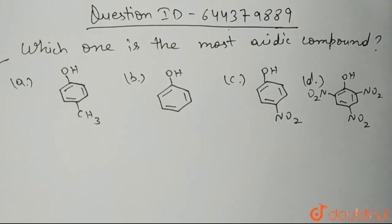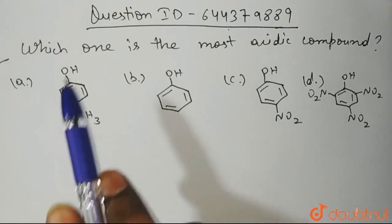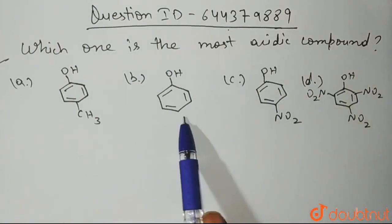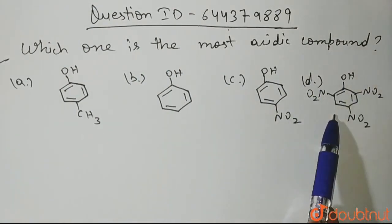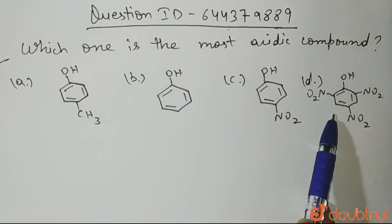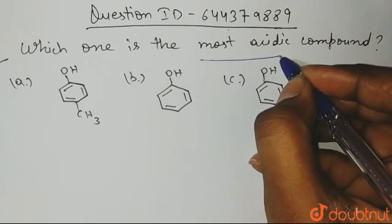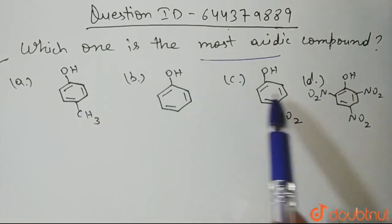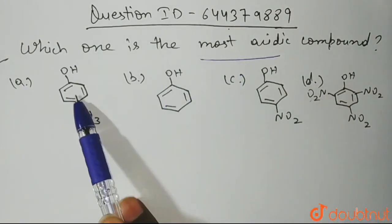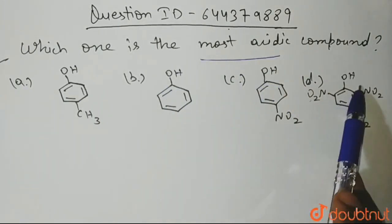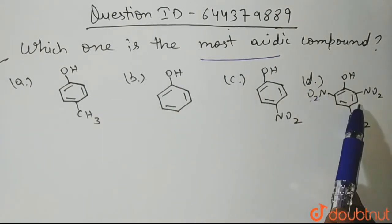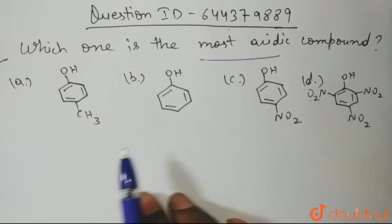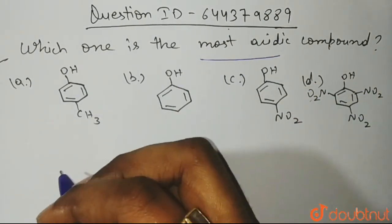Hello students, the question is: which one is the most acidic compound? So out of all these four options, we need to tell which one is the most acidic compound. As you can see, all these structures have a benzene ring and an OH group present in them — that means all are phenolic compounds, with different substitutions present in them.